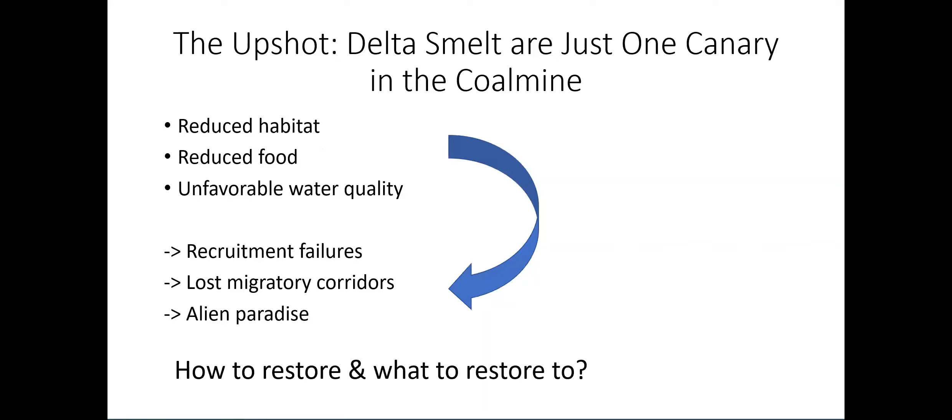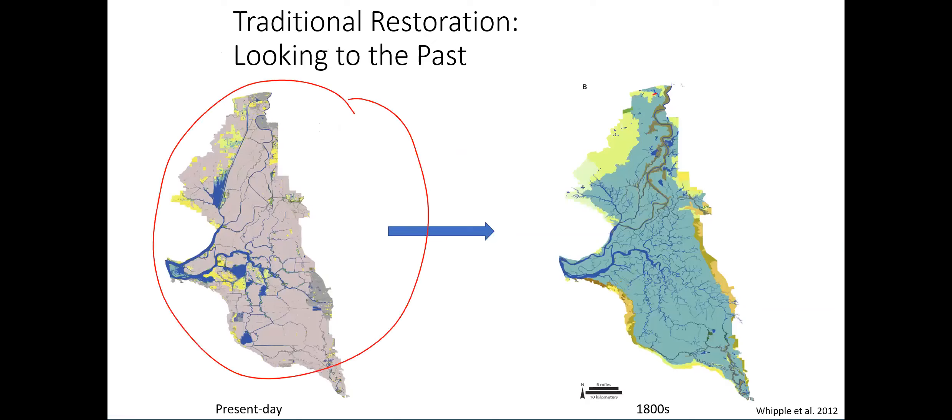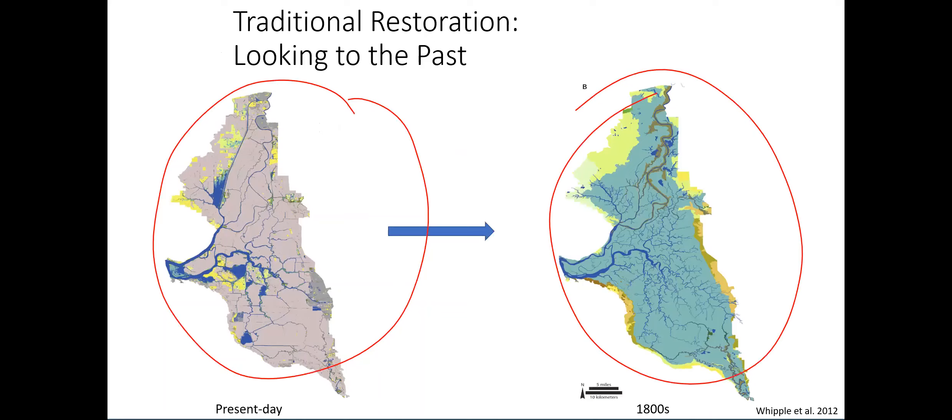Hatcheries — both production and conservation — face the same problems: restricting genetic diversity of individuals being released. Highly domesticated smelt back into an unsuitable environment have very little chance of success. For participation credit, think about comparing the life history of different salmoniforms: delta smelt's life history is very different from salmonids, though sharing some features — why are there so many strategies for salmon and so few for smelt? The upshot is that delta smelt is just one canary in a coal mine. The question becomes: what are we restoring to, when the system today is so different from the past?